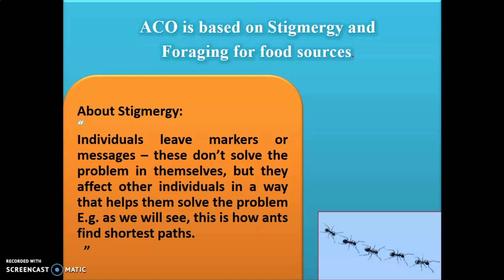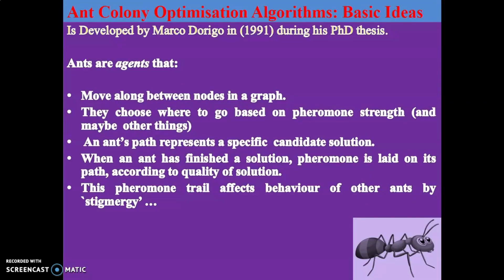This is how ants find the shortest path — this is the basic idea behind ant colony optimization. Developed by Marco Dorigo in 1991 during his PhD thesis, he was an Italian scientist. In this algorithm, ants are the agents — they are slightly different from real ants. When you implement this algorithm, ants behave like a data structure. Ants move between nodes in a graph — from one node to another node — and choose where to go based upon the pheromone strength.